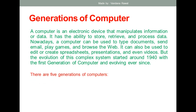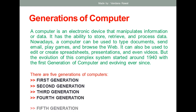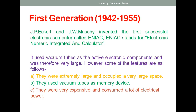There are basically five generations of computers: first generation, second generation, third generation, fourth generation, and fifth generation. Now, looking at the first generation, that was during 1942 to 1955. If I talk about the father of computers, Charles Babbage was the father of computers.